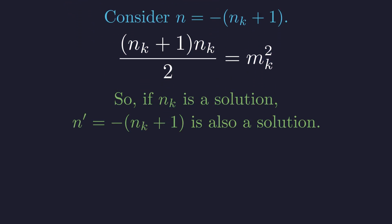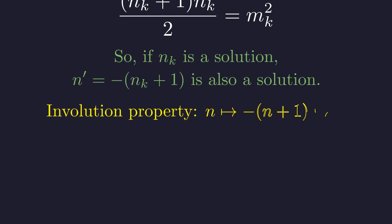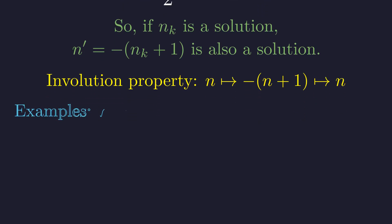Therefore, if n sub k is a solution, then n prime equals negative n sub k minus 1 is also a solution. This mapping is an involution. Applying it twice returns the original value. This accounts for all negative integer solutions. This gives us the negative solutions n equals negative 1, negative 2, negative 9, negative 50, and so on.